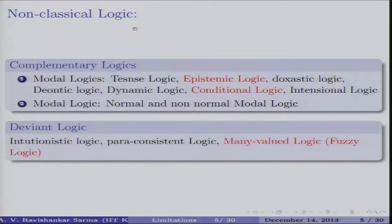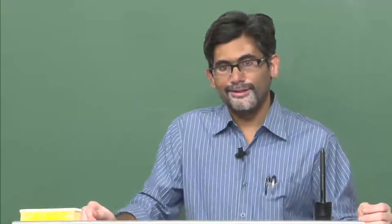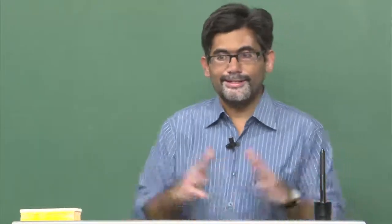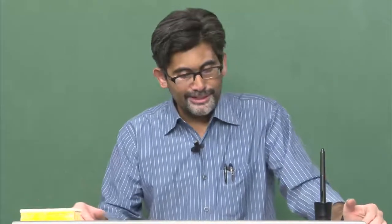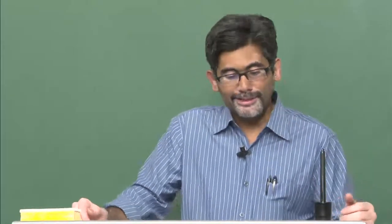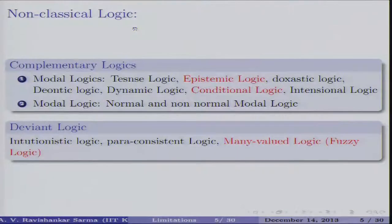Logic must apply to our day-to-day discourse, not only to mathematical or computational domains. In that process, we either extend classical logic or deviate from it. Deviating means dropping one of the three fundamental laws: law of identity, law of excluded middle, or law of non-contradiction. If you drop at least one, you are doing deviant logics. In intuitionistic logic, the law of excluded middle need not be a theorem. If you drop the law of non-contradiction, you are dealing with paraconsistent logic.